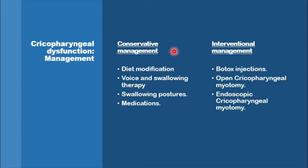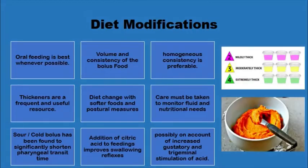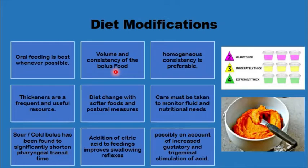Diet modification is the number one step in management. Oral feeding is important to patients and should be maintained whenever possible. What can be changed is the volume, consistency, or rate of administration of the bolus. This can be achieved by methods like blending — making the bolus as homogenous as possible — which makes it more tolerable for patients.